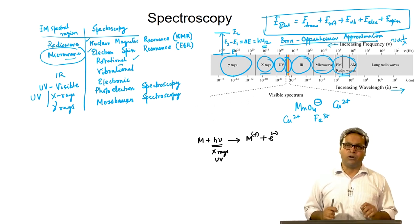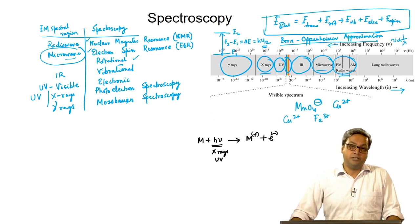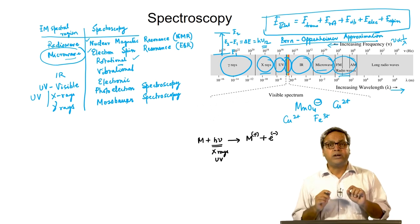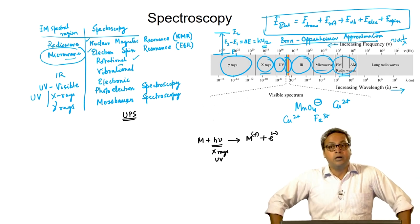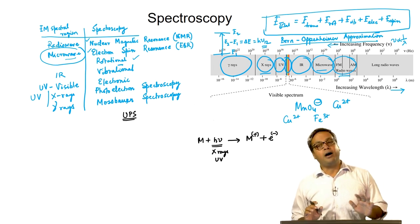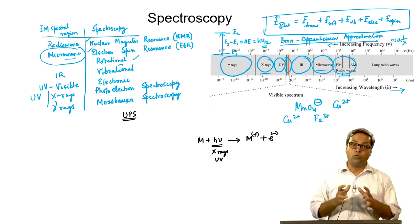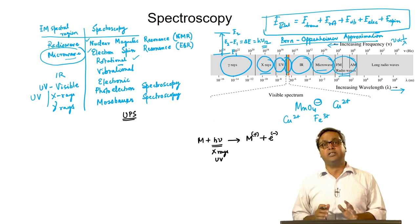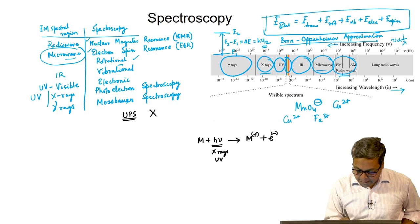An electron far from the nucleus — the outer valence electrons involved in bonding — has lower binding energy and can be ejected using ultraviolet light. Thus, Ultraviolet Photoelectron Spectroscopy (UPS) provides information about valence electrons, such as the 2s or 2p electrons in carbon. High-energy X-rays can knock out core electrons close to the nucleus — for example, the 1s electrons of carbon — and X-ray Photoelectron Spectroscopy (XPS) gives information about the binding energy of core electrons.